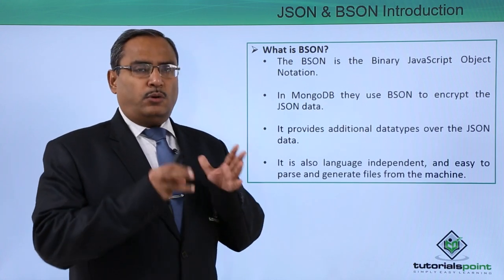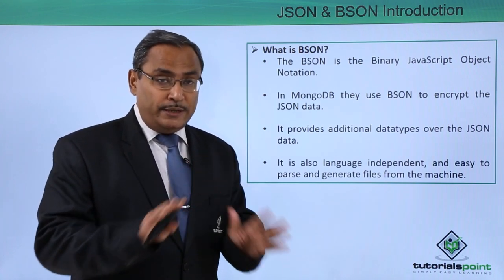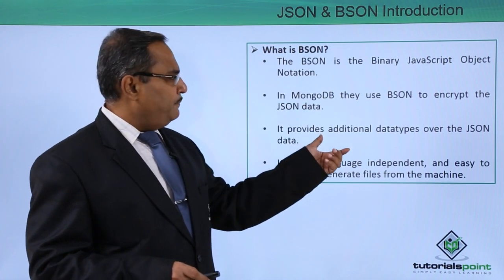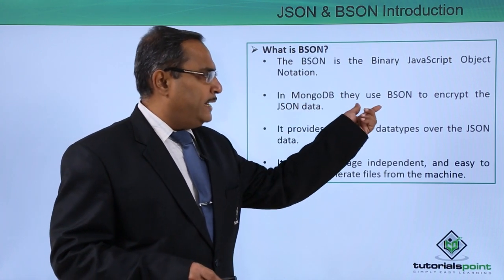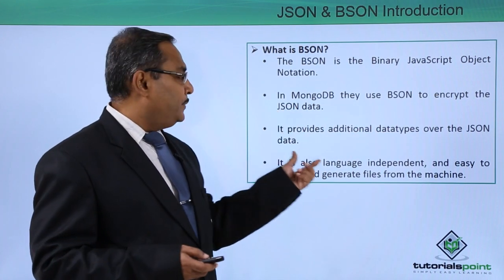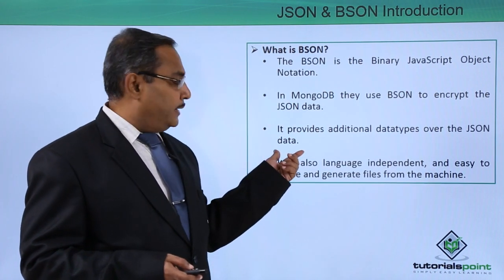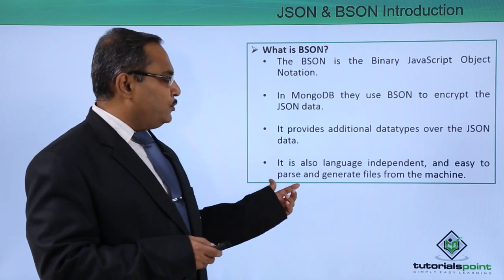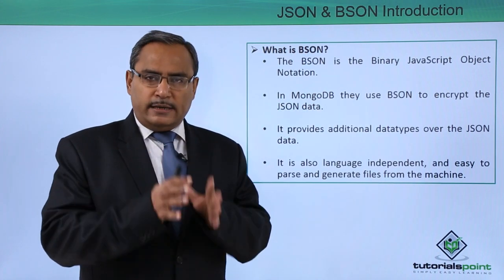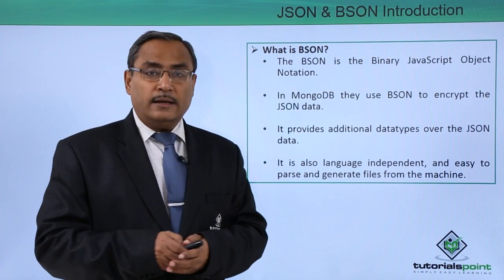Now let us go for BSON. BSON means binary JSON and it is not in human readable format. BSON is a binary JavaScript Object Notation, and in MongoDB they use BSON to store our JSON data because it is not human readable. It provides additional data types over JSON, is also language independent, and is easy to parse and generate files from the machine. This is BSON — the binary-encoded JSON.